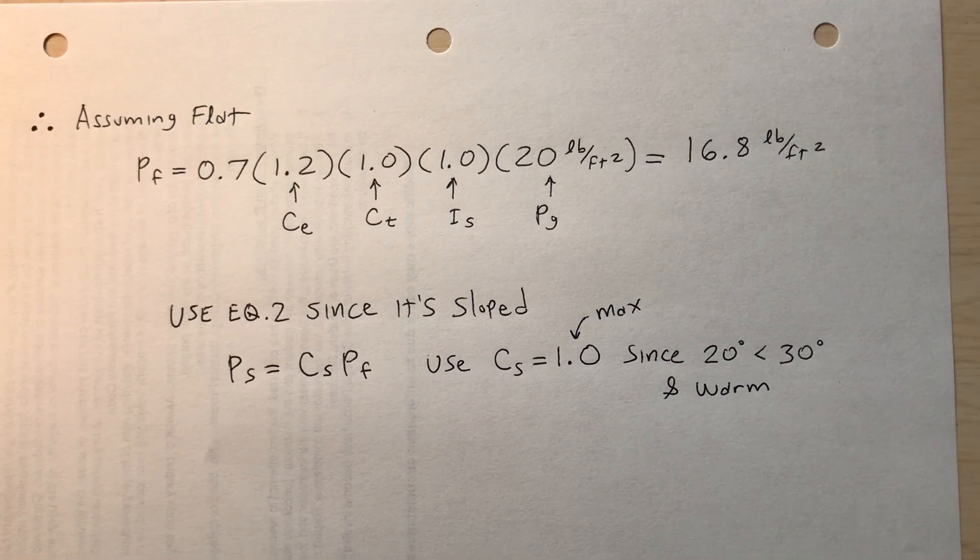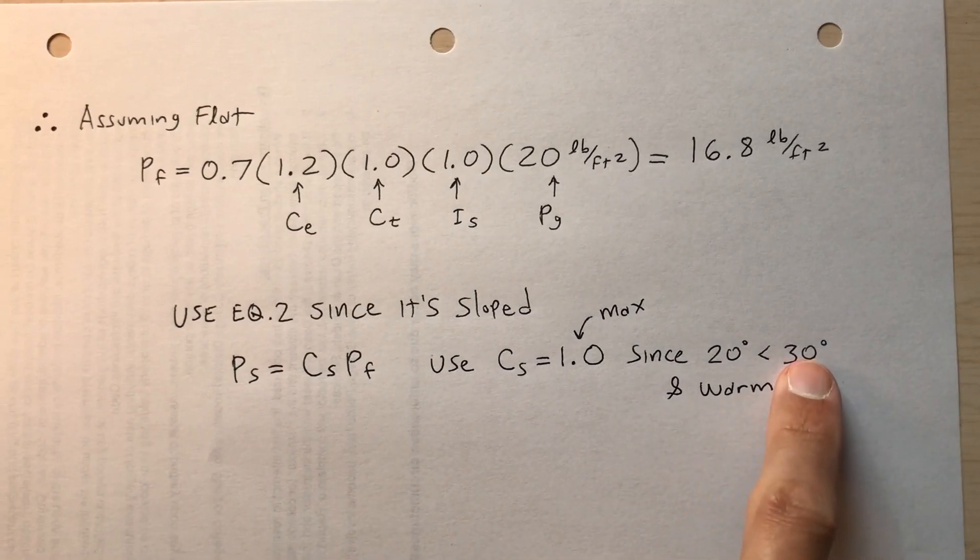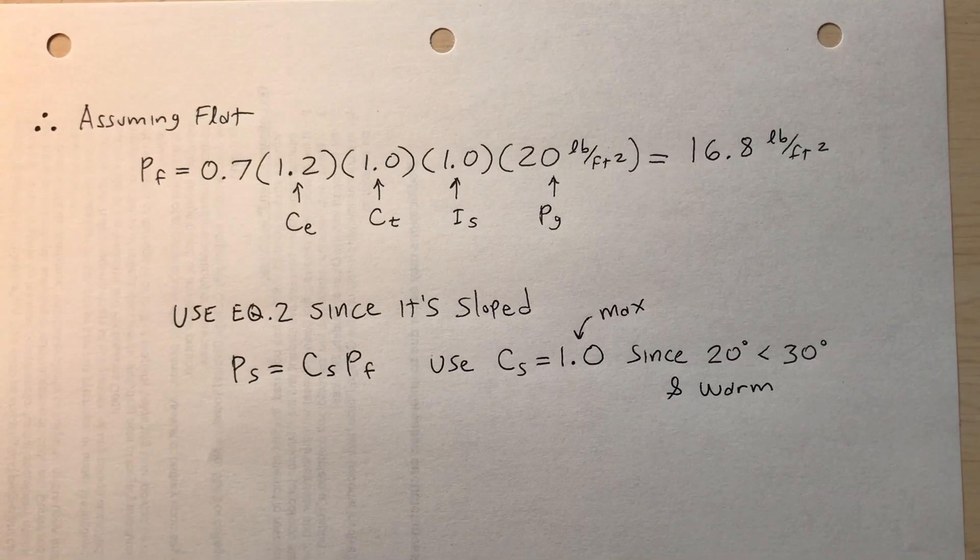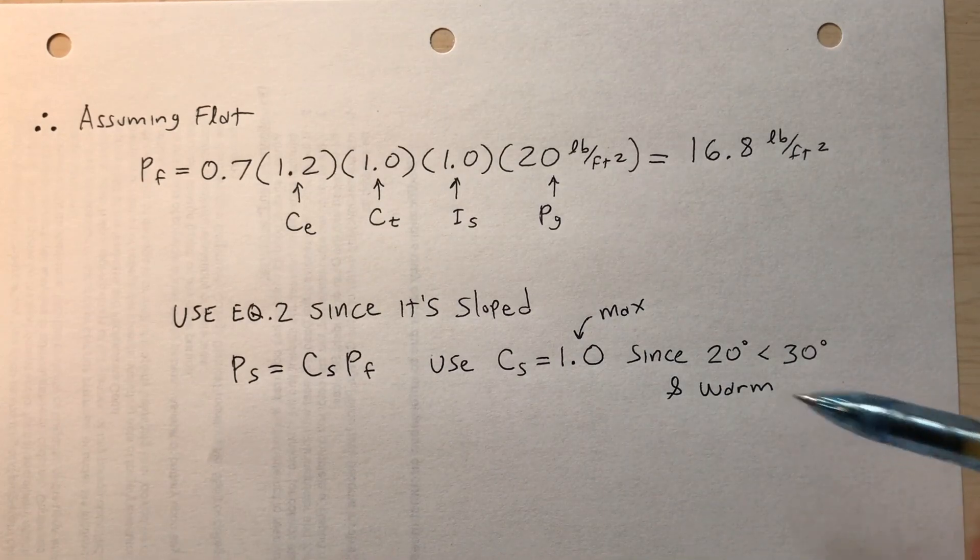However, as I said a moment ago, for a steep roof, 30 degrees is usually a good standard. If it's steeper than 30 degrees, then I can reduce that c_s to less than one. And thereby, I would reduce the p_s. Also, it's a warm roof. It's a heated building. So I can take that into consideration.